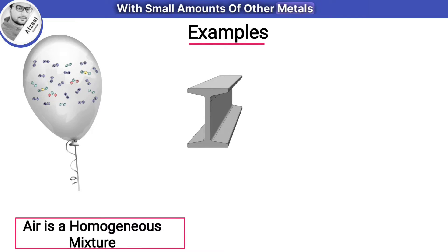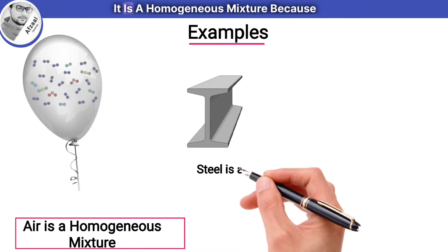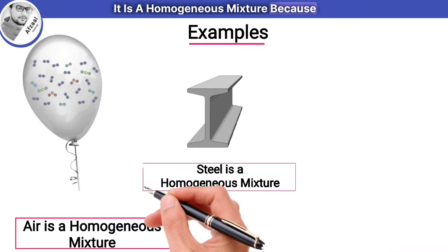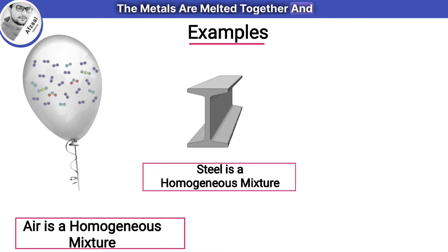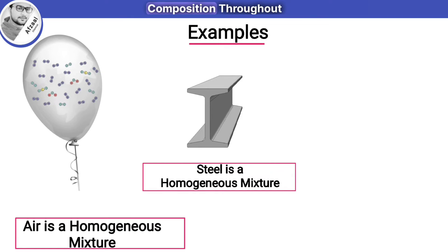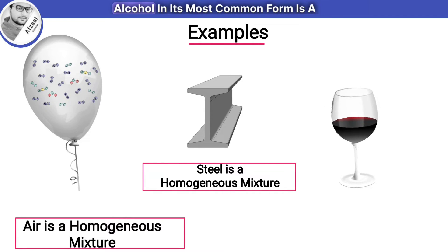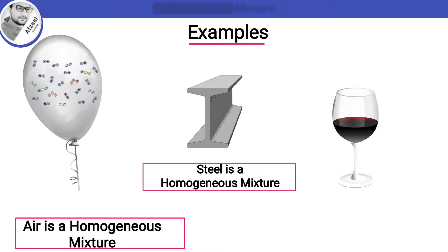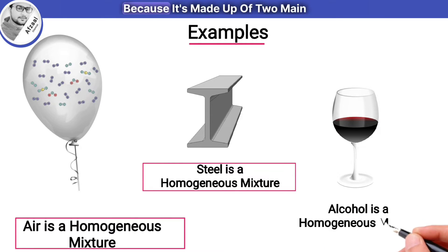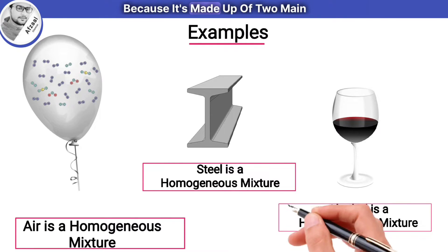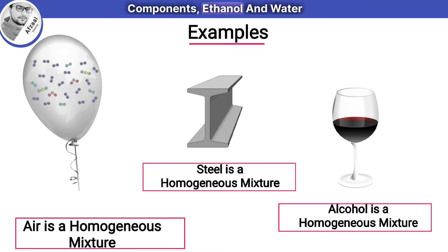Steel is a mixture of iron and carbon with small amounts of other metals. It is a homogeneous mixture because the metals are melted together and form a solid alloy that has the same composition throughout. Alcohol in its most common form is also a homogeneous mixture because it's made up of two main components — ethanol and water — which blend together so perfectly that you can't see them separately.